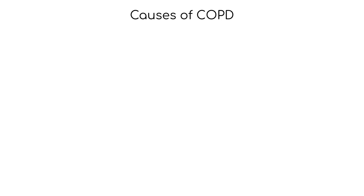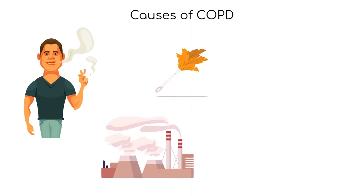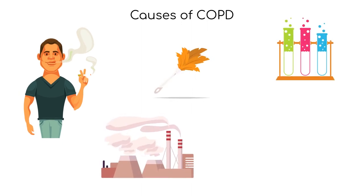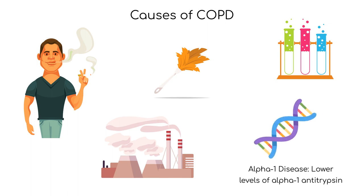The primary cause of COPD is exposure to irritants such as cigarette smoke, air pollution, dust, and chemicals, which can change the airways and lung tissue. Genetics also plays a role, and people with the alpha-1 disease have a lower level of alpha-1 antitrypsin, which protects lung tissue.